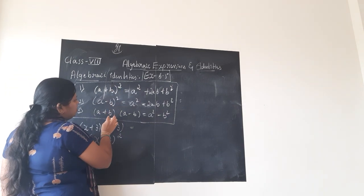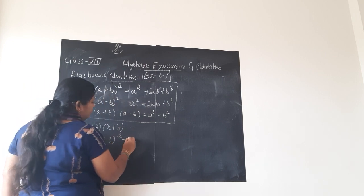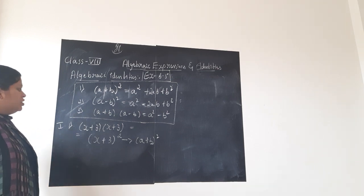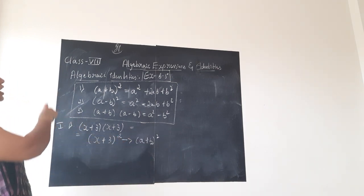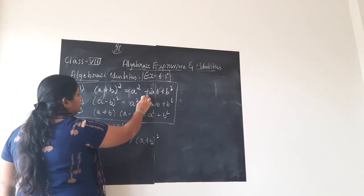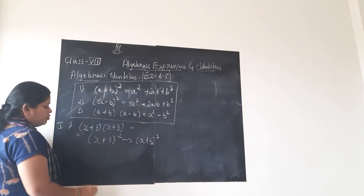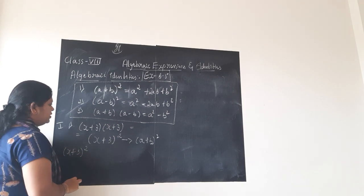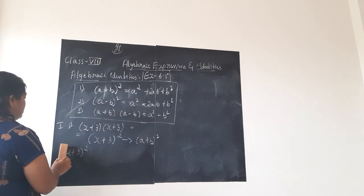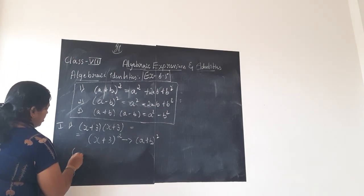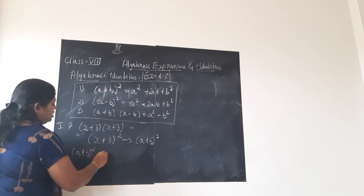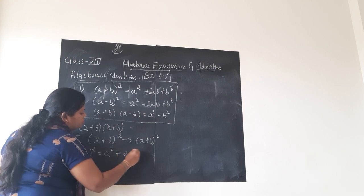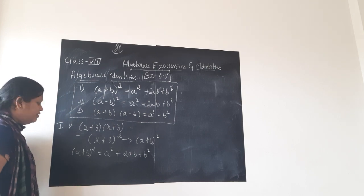Now, x plus 3 whole square is in the form of identity one: a plus b whole square. So x plus 3 whole square is equal to a squared plus 2ab plus b squared. I am writing the identity here since this is the first problem. From the next problem onwards, you should write it in your classwork.